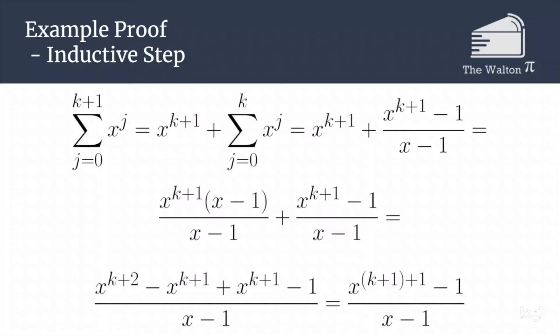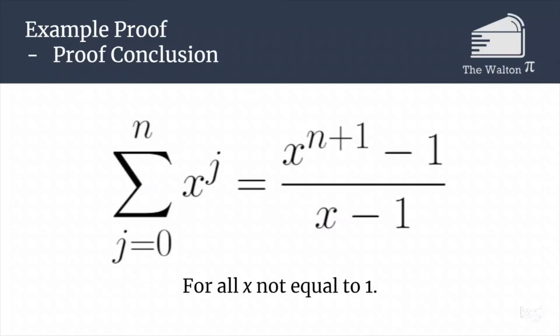We have proven that for all n greater than or equal to 0, the sum from j equals 0 to n of x to the j is equal to x to the n plus 1 minus 1, all over x minus 1.